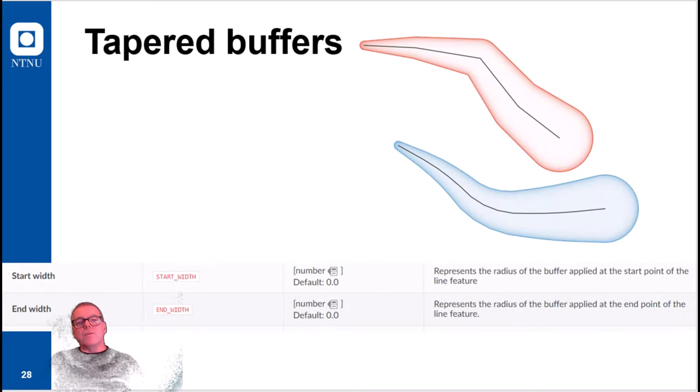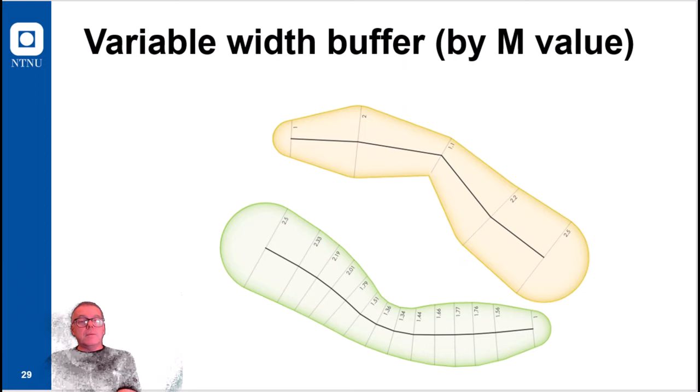Then you also have what we call tapered buffers for linear features. You set a start width and an end width, and then in between the two then interpolate the buffer length.